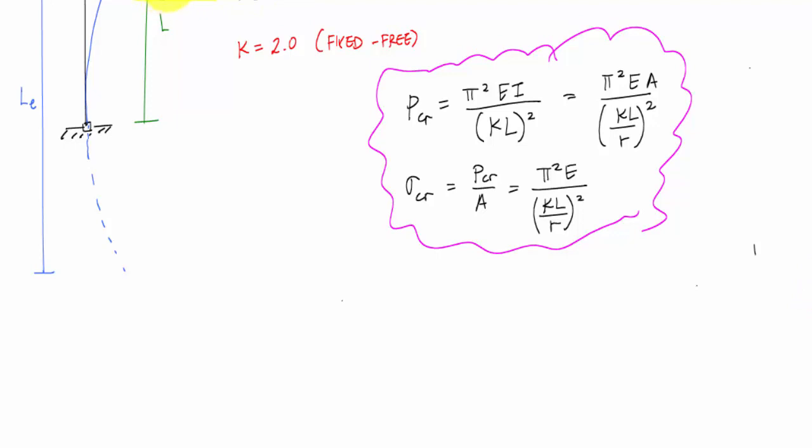It's a great thing to know. This KL over R is what we call the slenderness ratio.